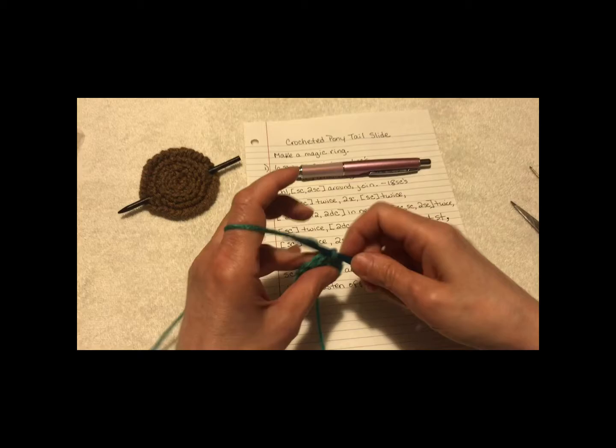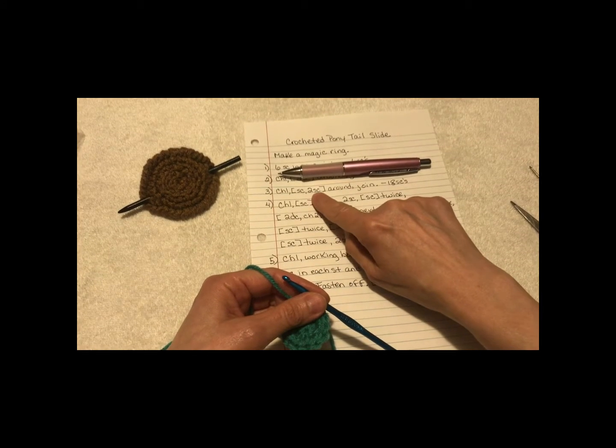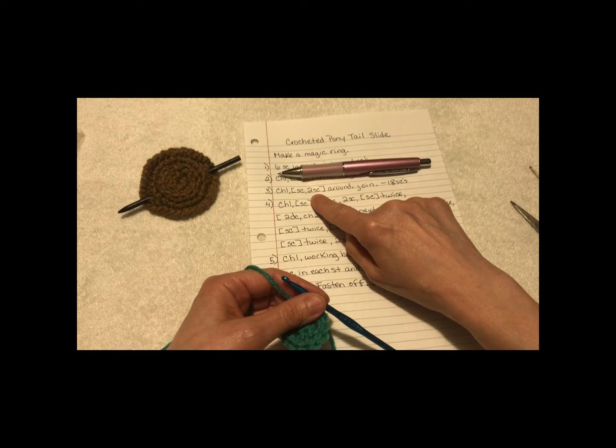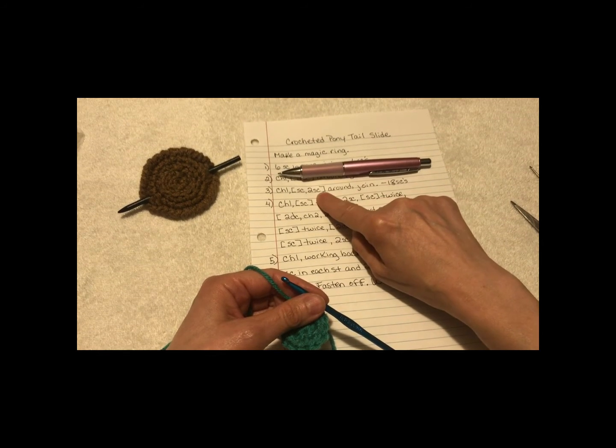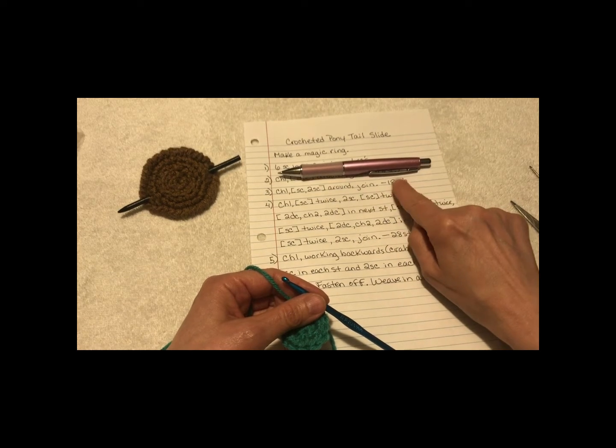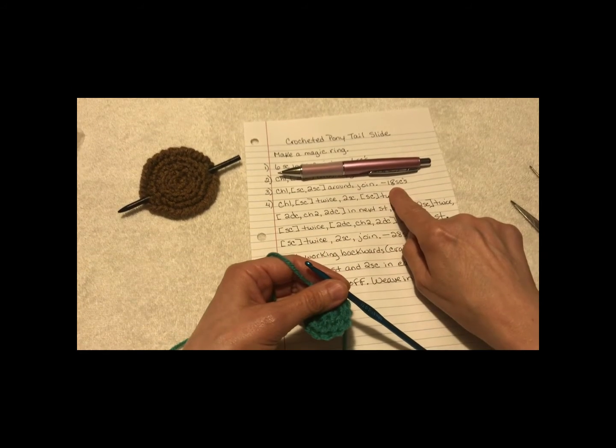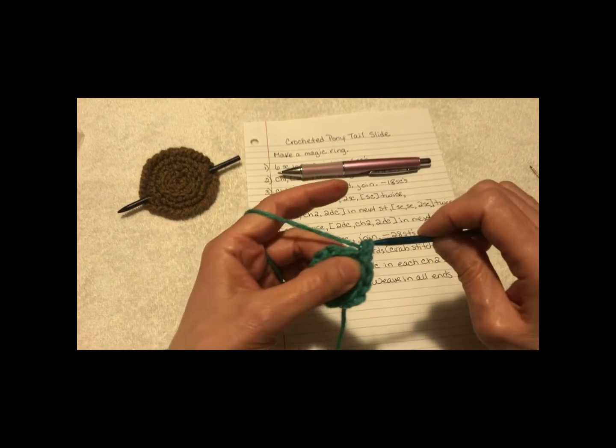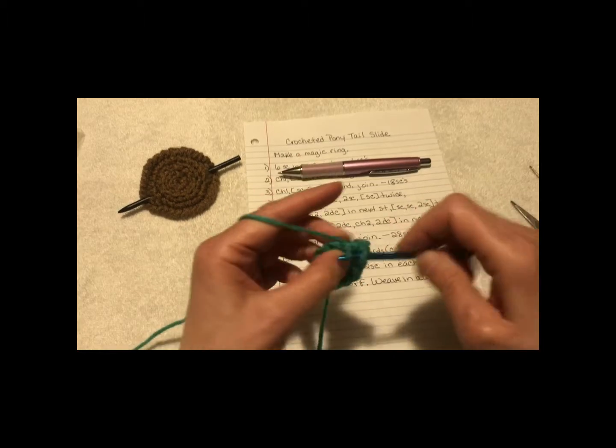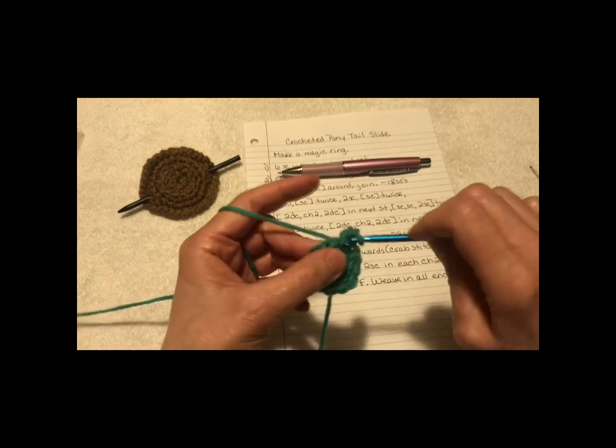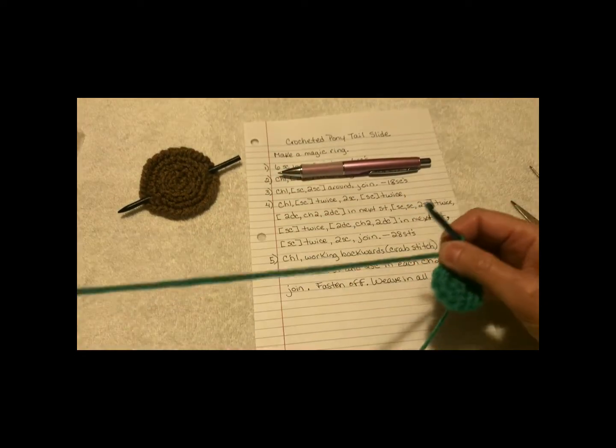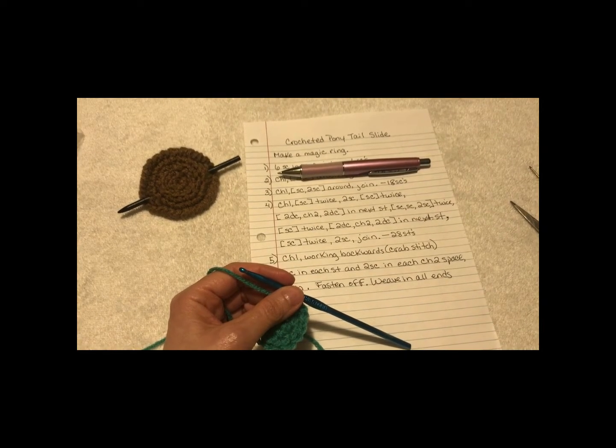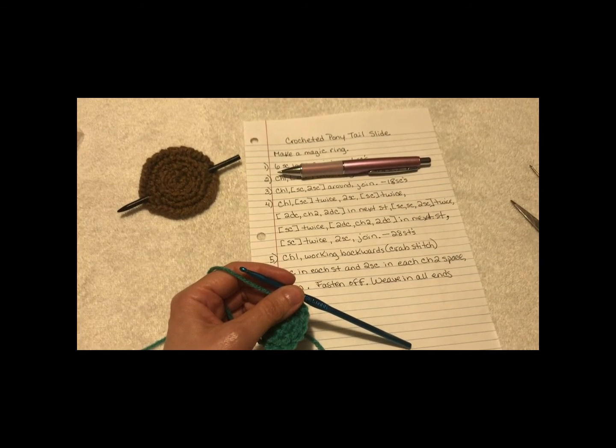Round 3. You're going to chain 1. Single crochet in the next stitch. And then 2 single crochets in the following stitch. And you're going to repeat that pattern all the way around. And you'll end up with 18 single crochets. So, single crochet in the first one. And then the next stitch, you're going to do 2. Now repeat that pattern around. And then I want you to join and restart the video.